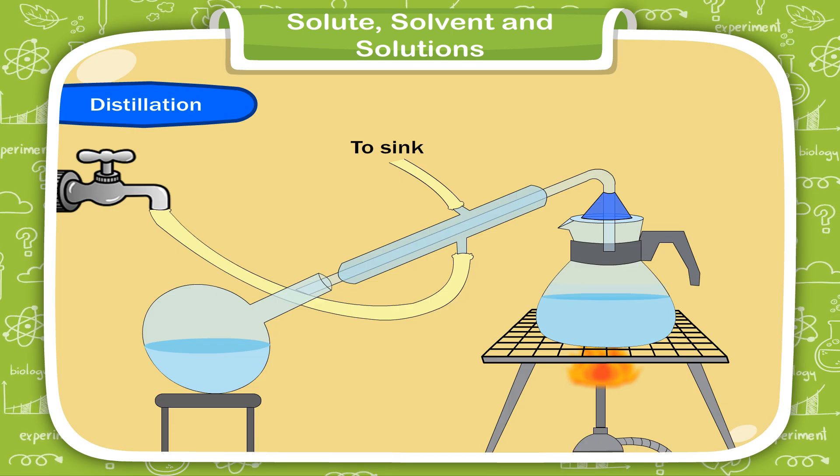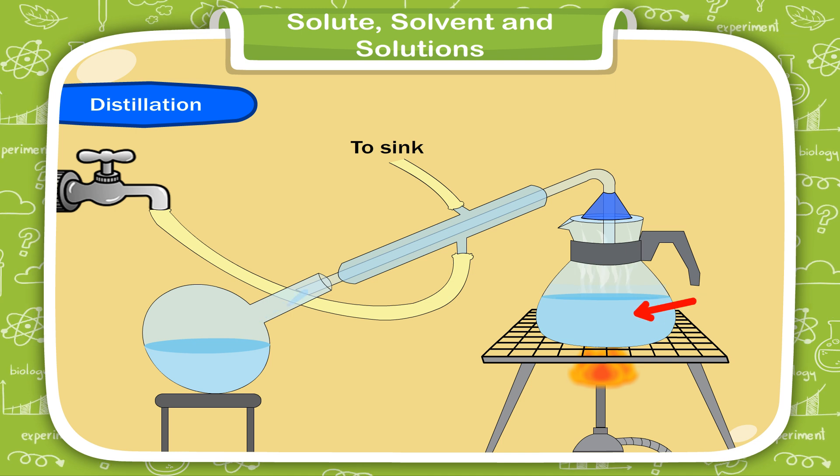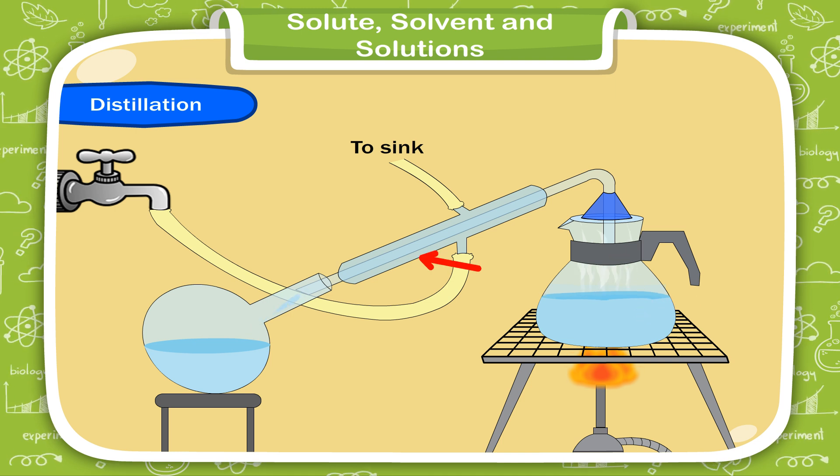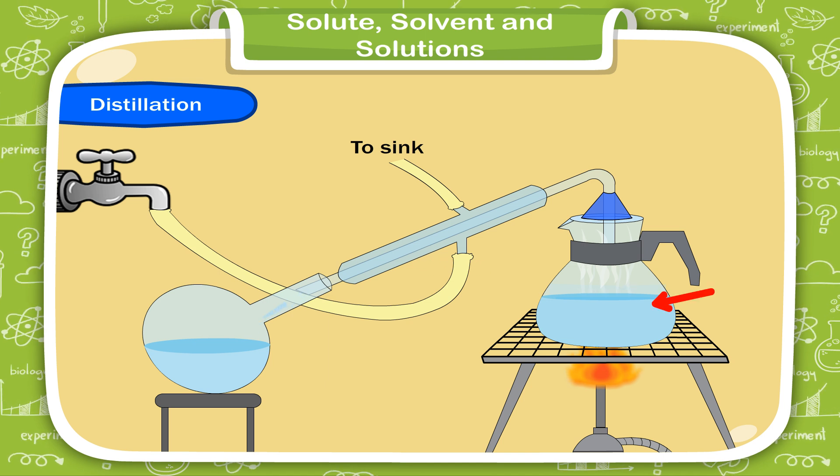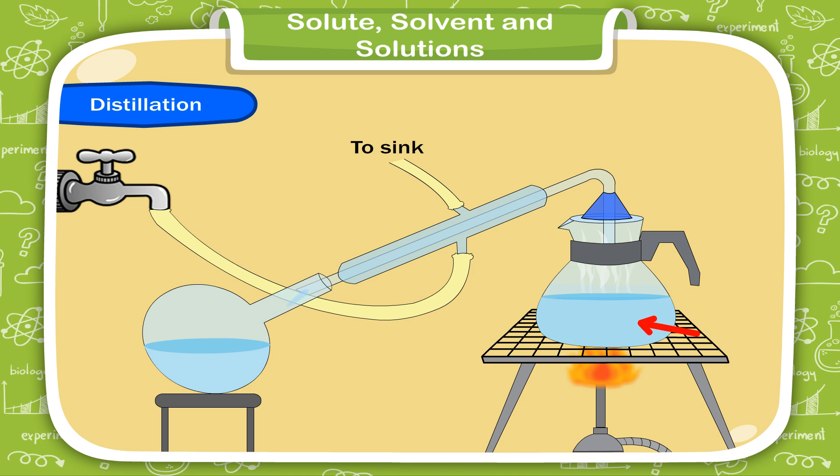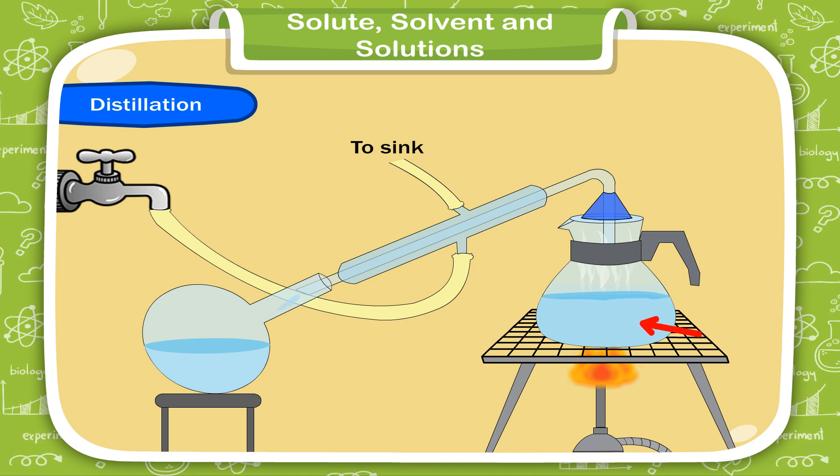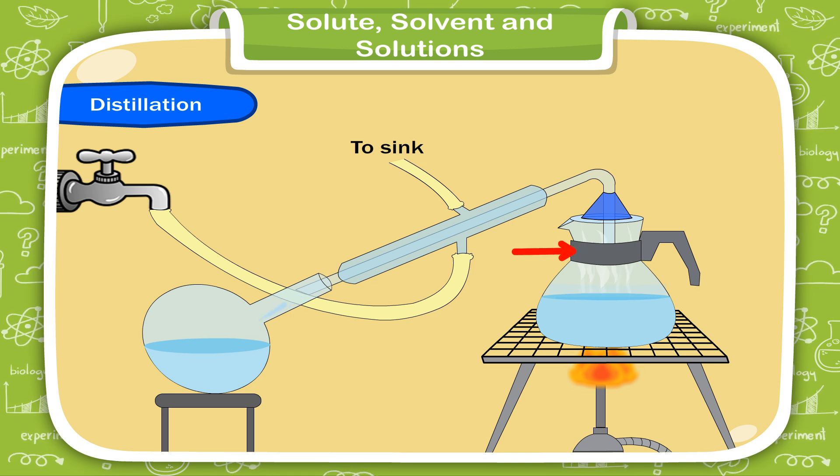Distillation. This method is best for separating a liquid from a solution. Methods of evaporation and condensation are used for removing soluble substances from water. Evaporate water, having soluble substances, in a flask by heating, and then allow water vapor to condense in a condenser.